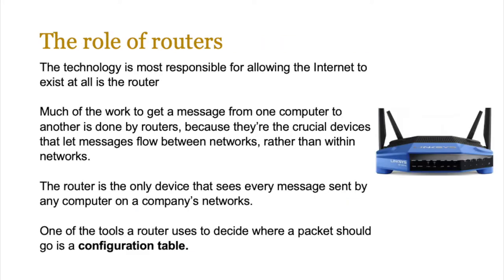In order for circuit switching and packet switching to actually function, the technology most responsible for allowing the internet to exist is the router. When you send a message from one computer to another it's done via routers, because these are crucial devices that let messages flow between different networks rather than within networks. The router is the only device that sees every message sent by any computer on a company's network, and one of the most important tools the router uses to decide where a data packet should go is a configuration table, also known as a routing table.